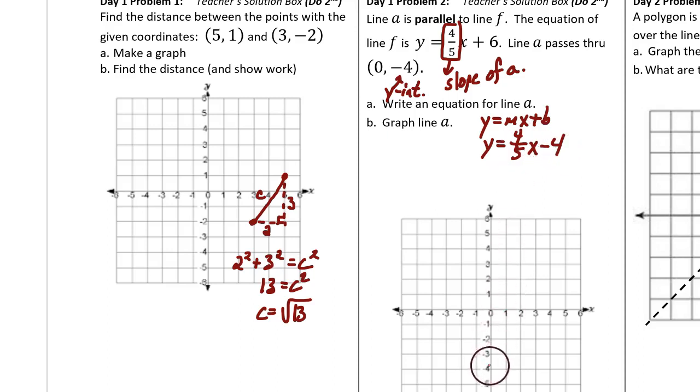Now the graph. The y-intercept is negative 4 and the slope is up 4 over 5. Here's the diagonal line.